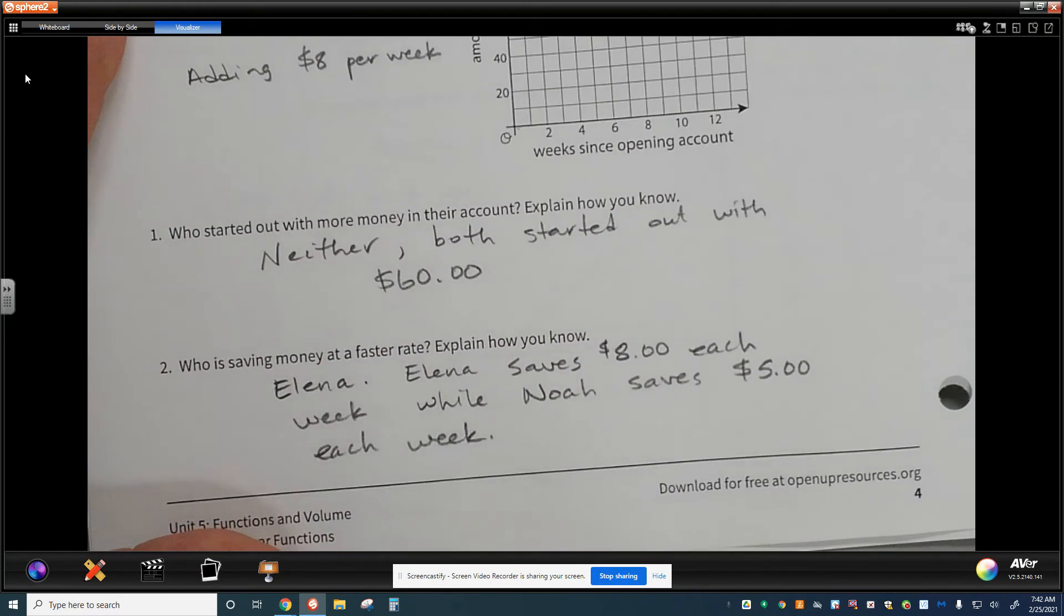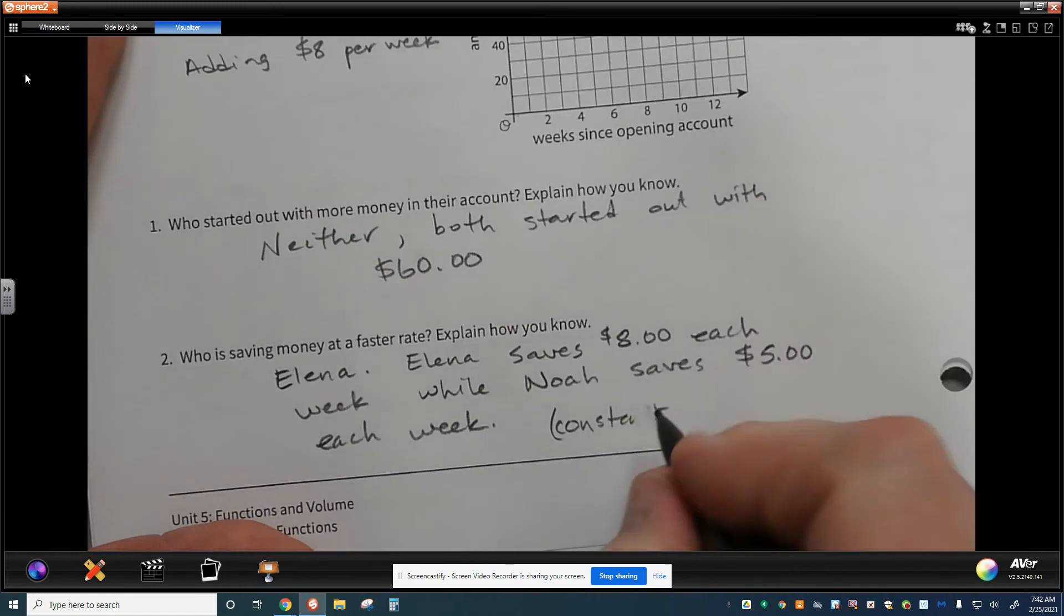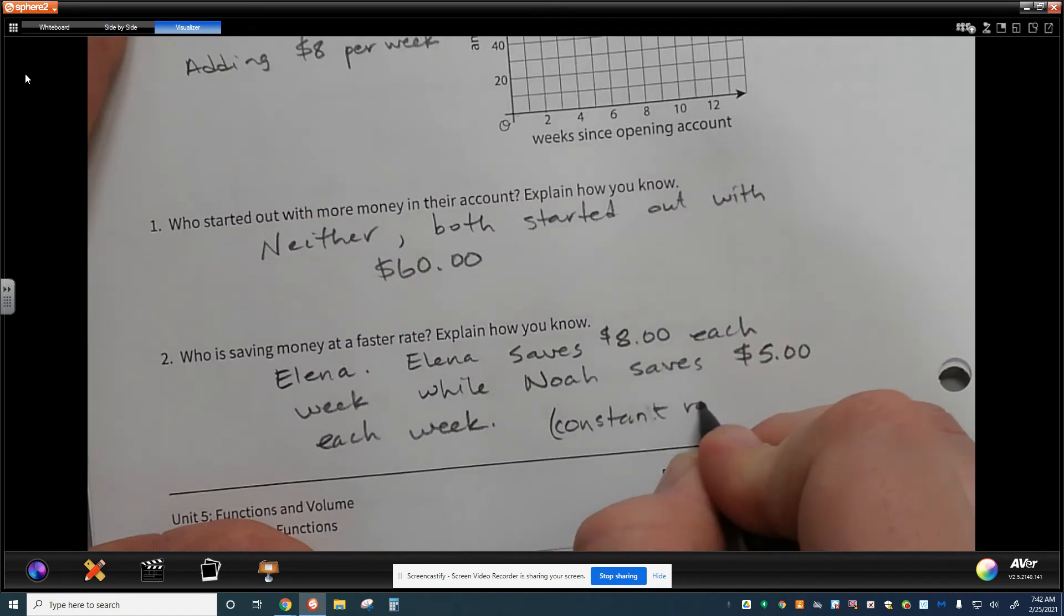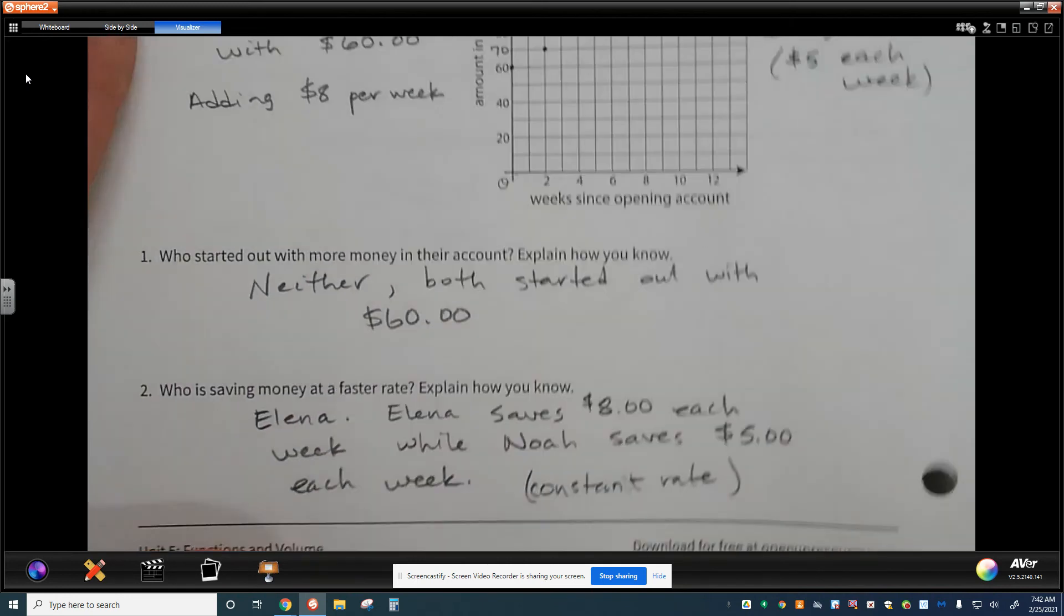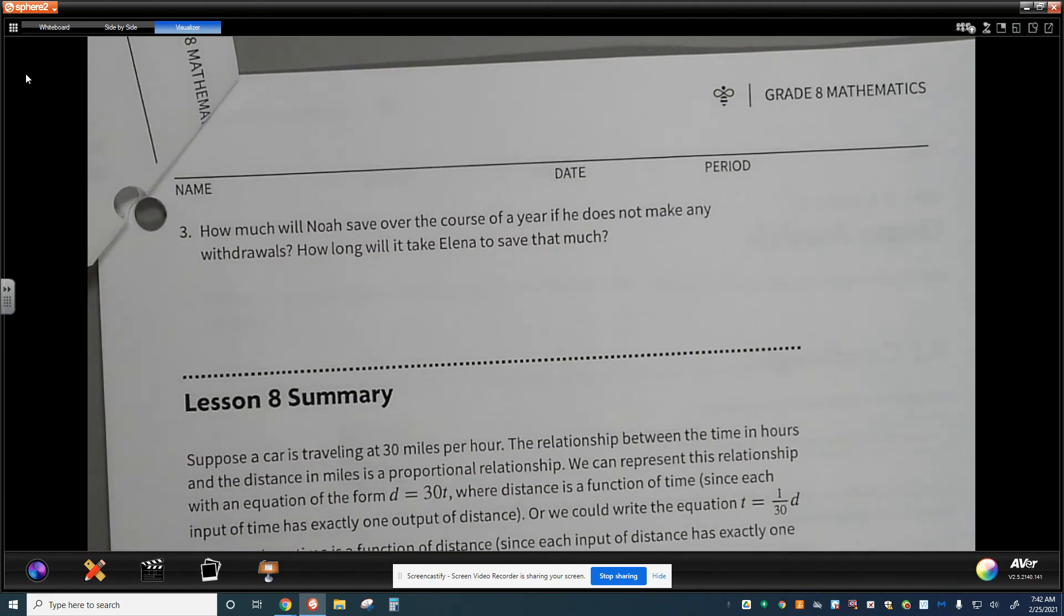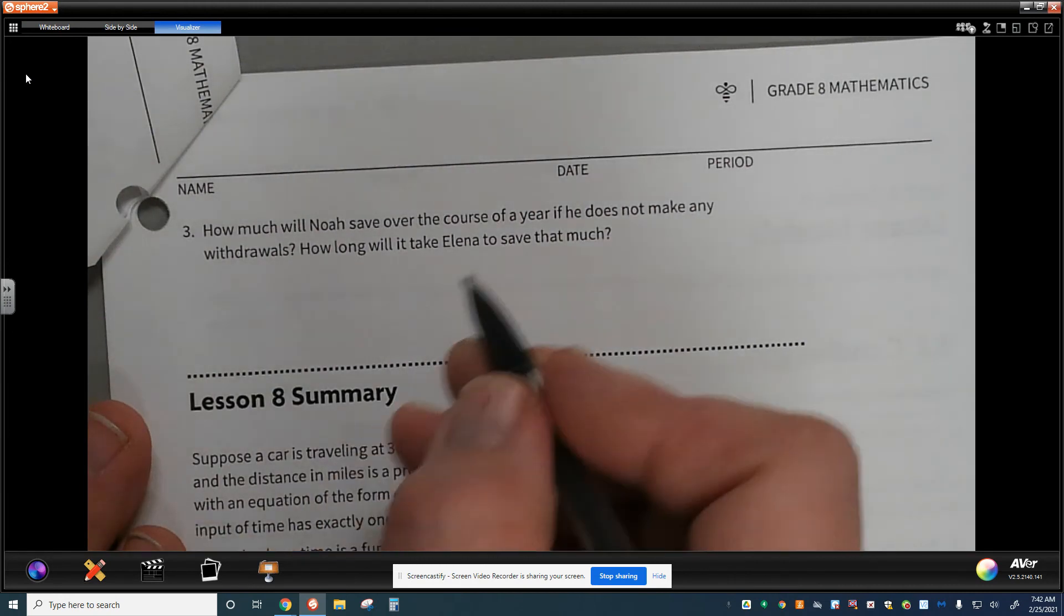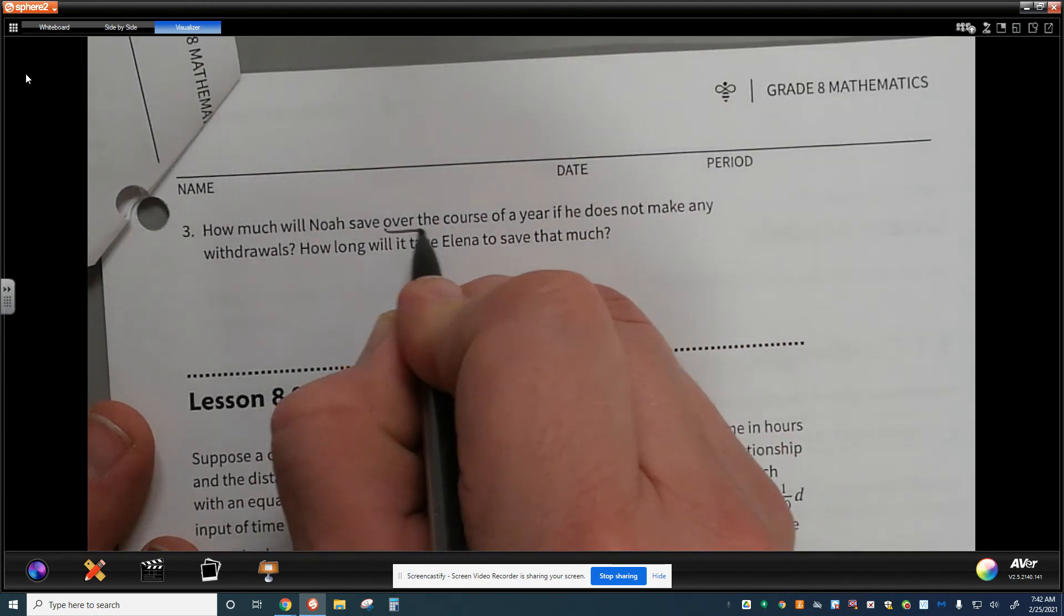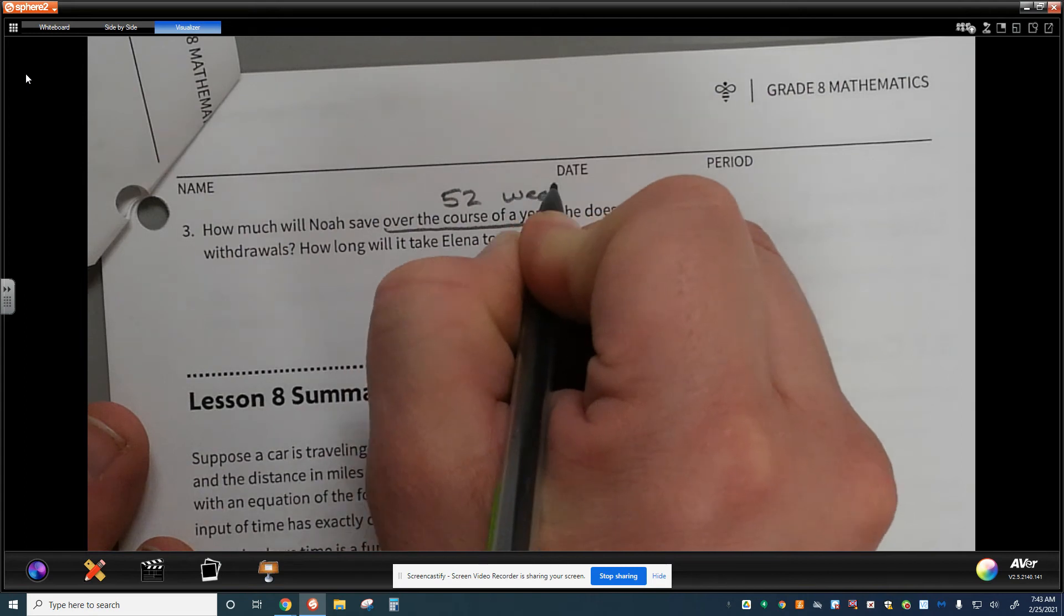And if you're wondering, well, how did I know that? Well, I'm basing that on constant rate. The constant rate that we look at is just how the data is changing from point to point. So final question in the lesson is how much will Noah save over the course of a year if he does not make any withdrawals? And how long will it take Elena to save that much money? The important piece to know is if we're talking about over the course of the year, we have to know how many weeks that is. There are 52 weeks each year.